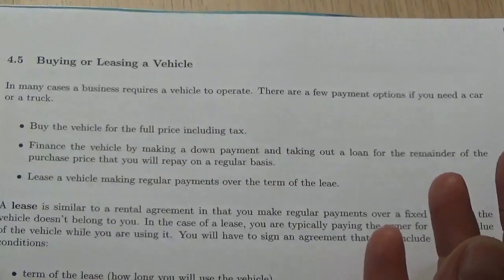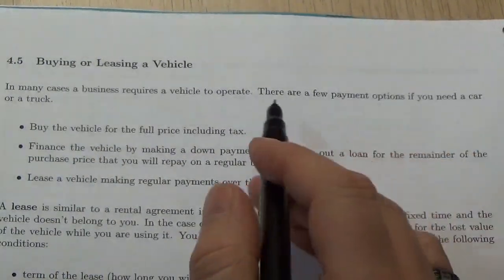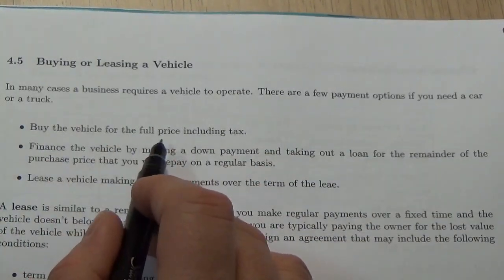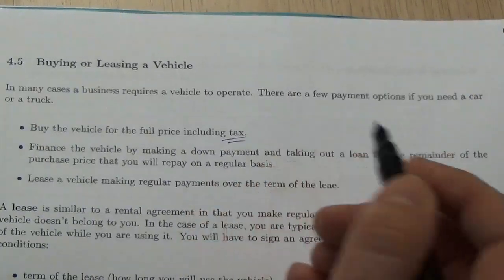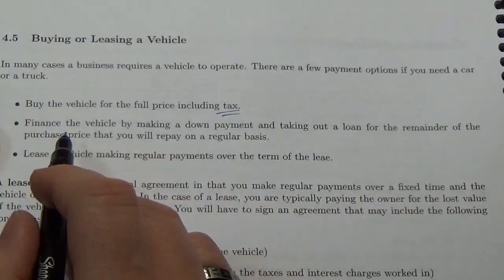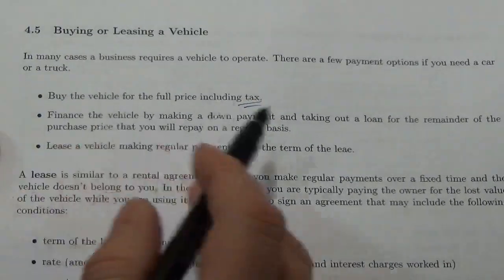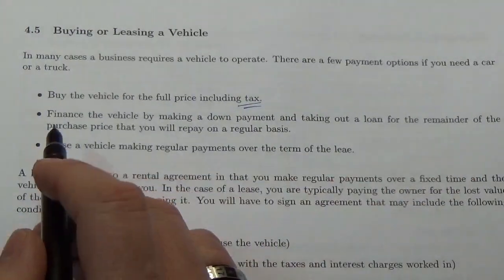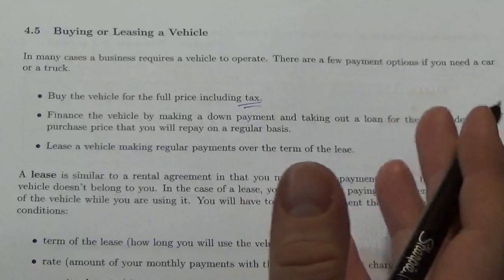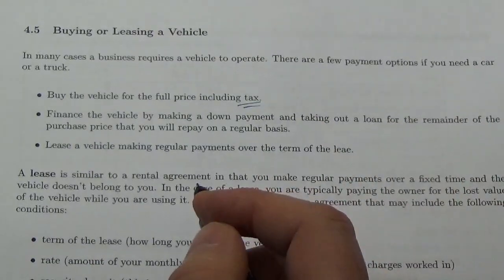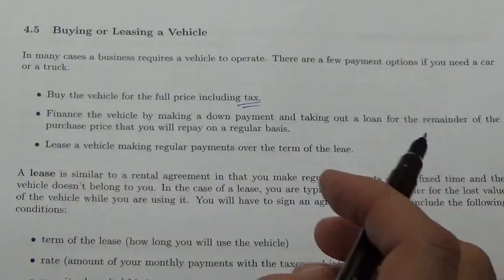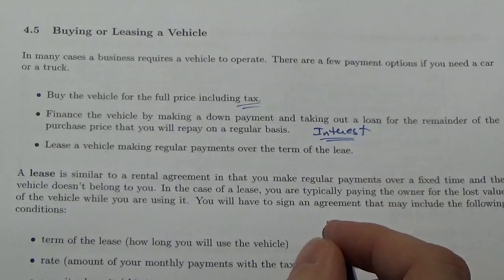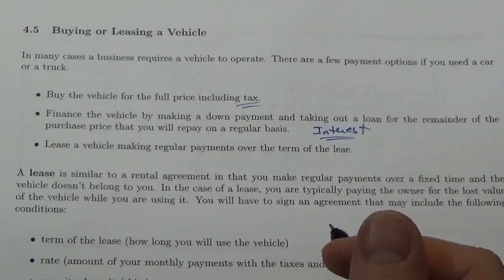In many cases, a business requires a vehicle to operate. There are a few ways you can go about doing this. You can buy the vehicle for the full price including tax — and remember, you always have to think about tax. If you can just buy it outright, you'll pay less that way. Or you might have to finance the vehicle: you make a down payment, take out a loan, and then pay back the bank for the remainder of the purchase price, which means you're going to have to add interest. So you're going to be paying more for the vehicle than what it was listed as.